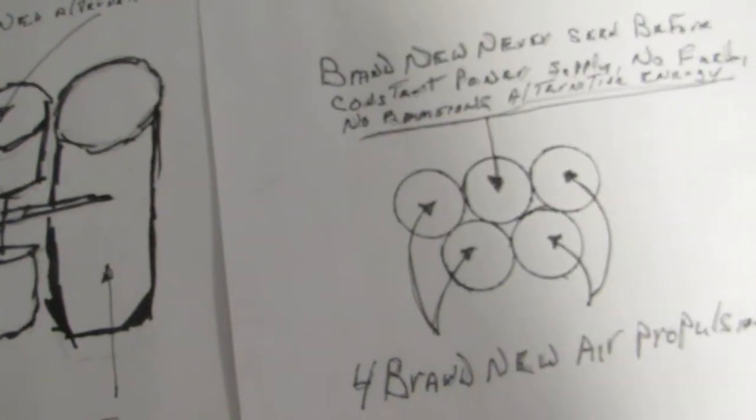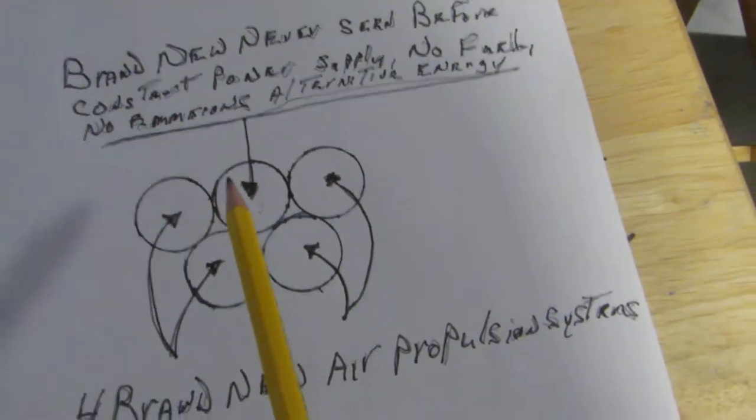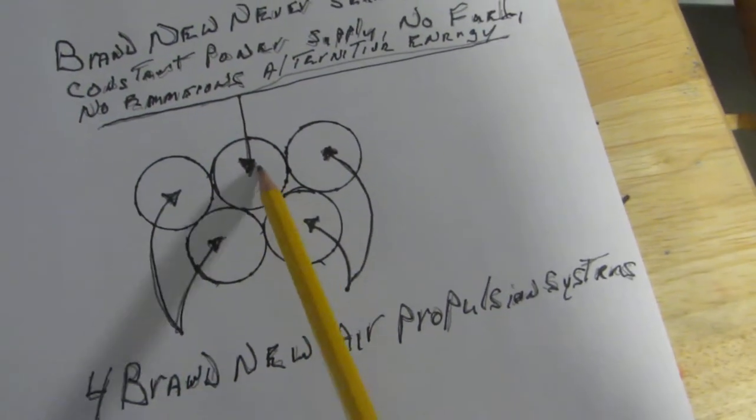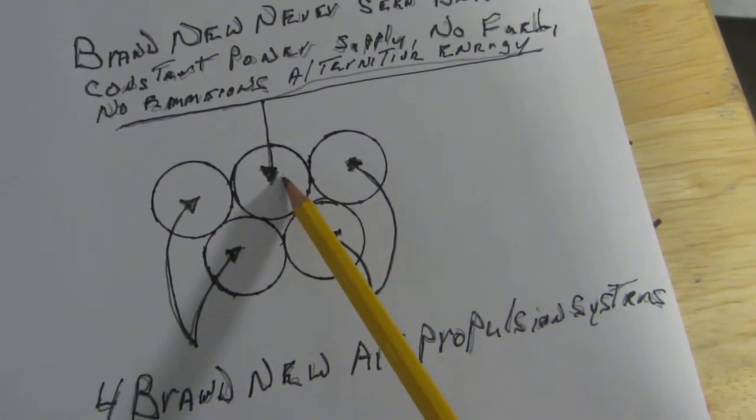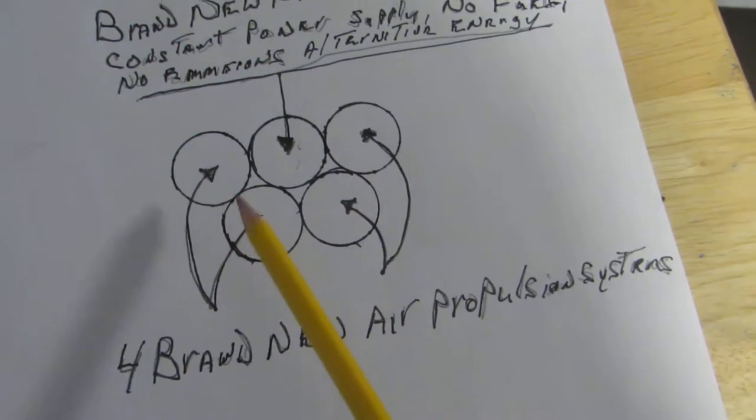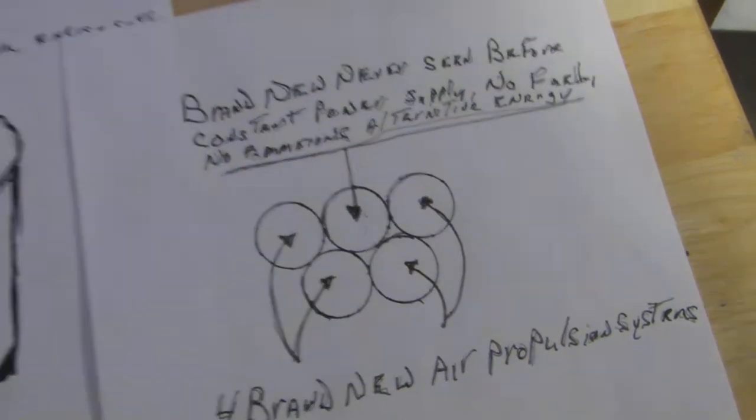Now, I did it this way. So just to give you an idea, looking down at the top, you're going to see my alternative energy system in the center, and then four air propulsion systems surrounded around it.